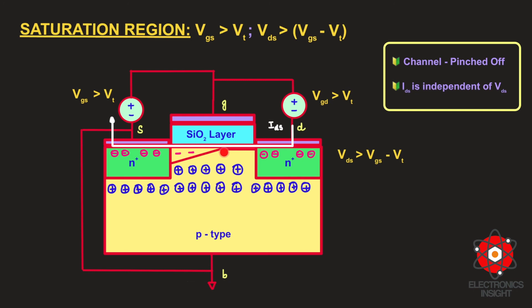When the PN junction at the drain becomes further reverse-biased, the depletion region extends towards the source side. There is no channel formation here — the channel is completely pinched off. In this state, IDS (drain-to-source current) becomes independent of VDS, meaning whatever value VDS increases to, the drain-to-source current remains constant. The concentration of electrons decreases due to this pinched-off or tapered channel at the drain end, so no extra electrons can reach the drain from the source side, and the drain-to-source current remains a constant value.